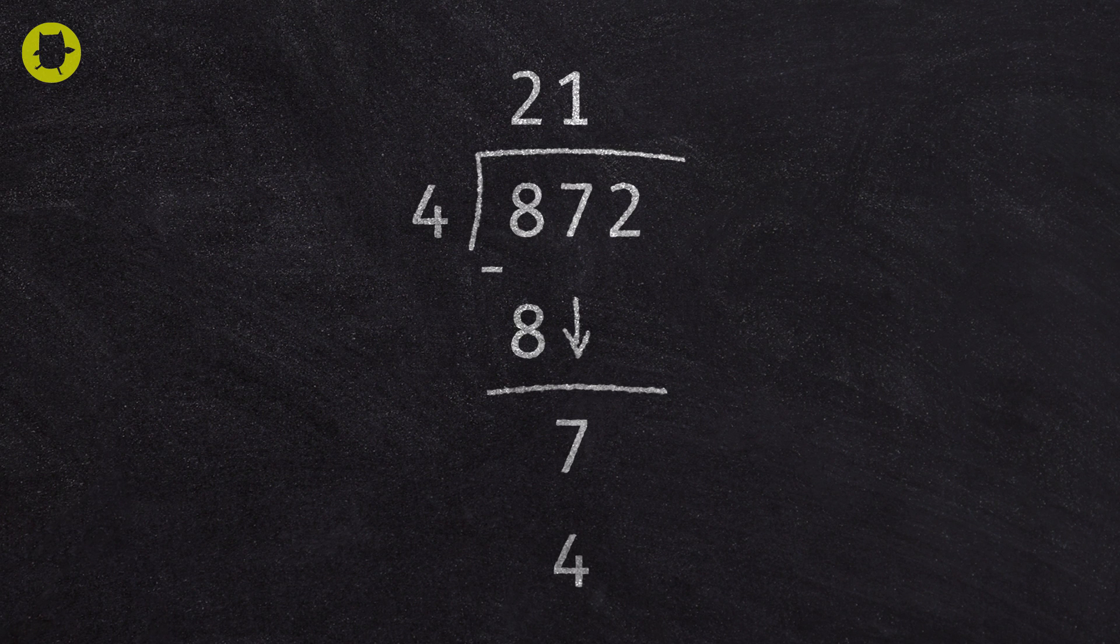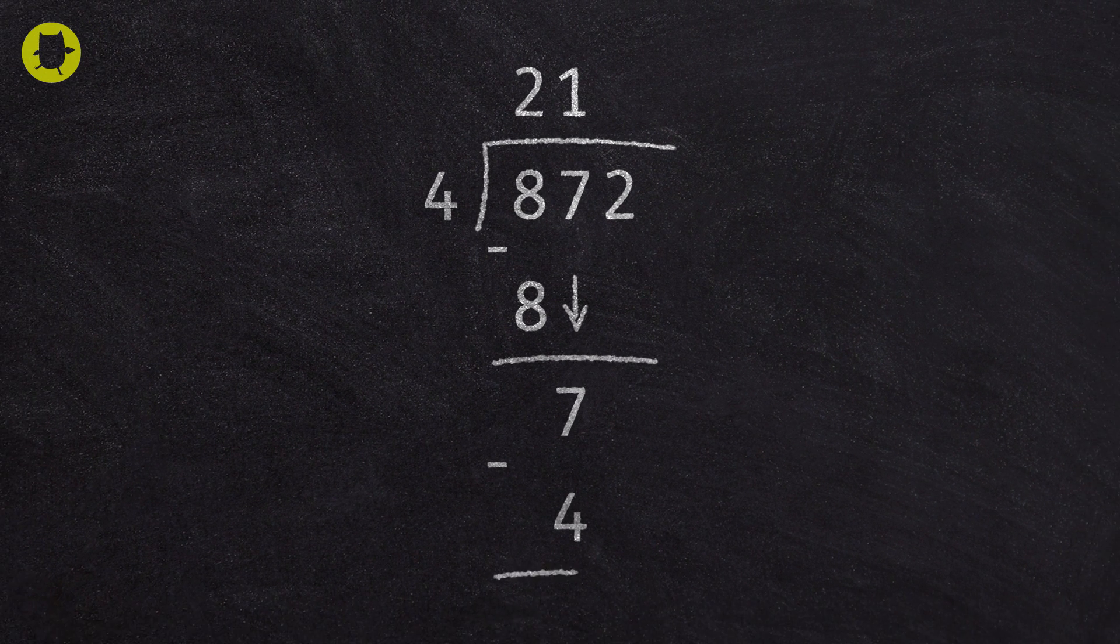Then we ask, what is 7 minus 4? The answer is 3, so we write the 3 at the bottom.